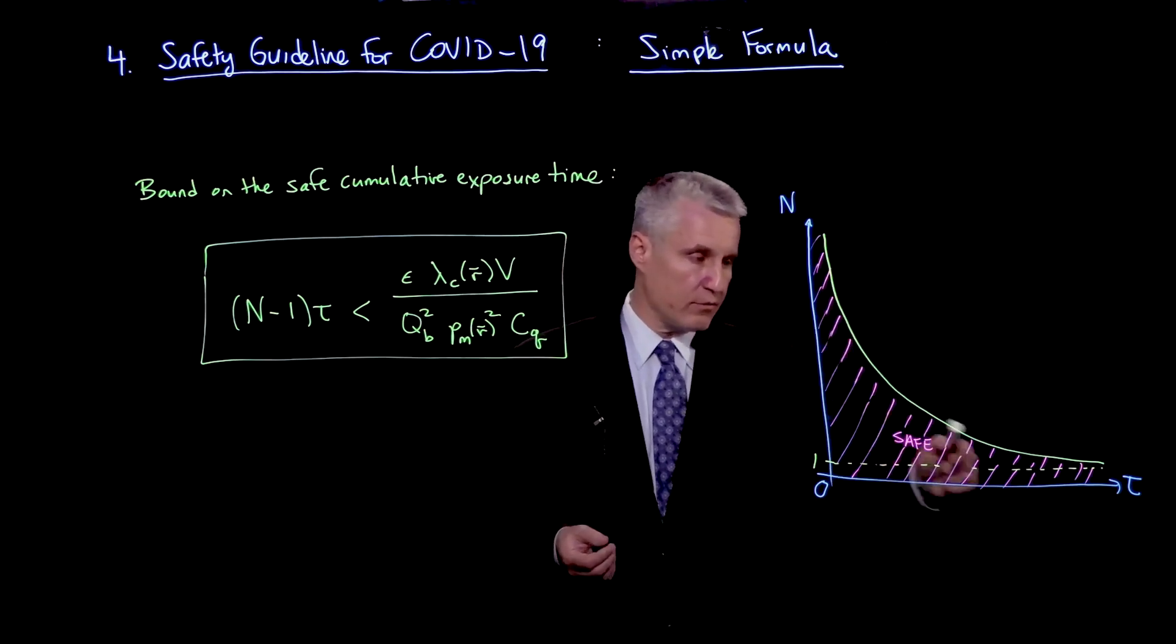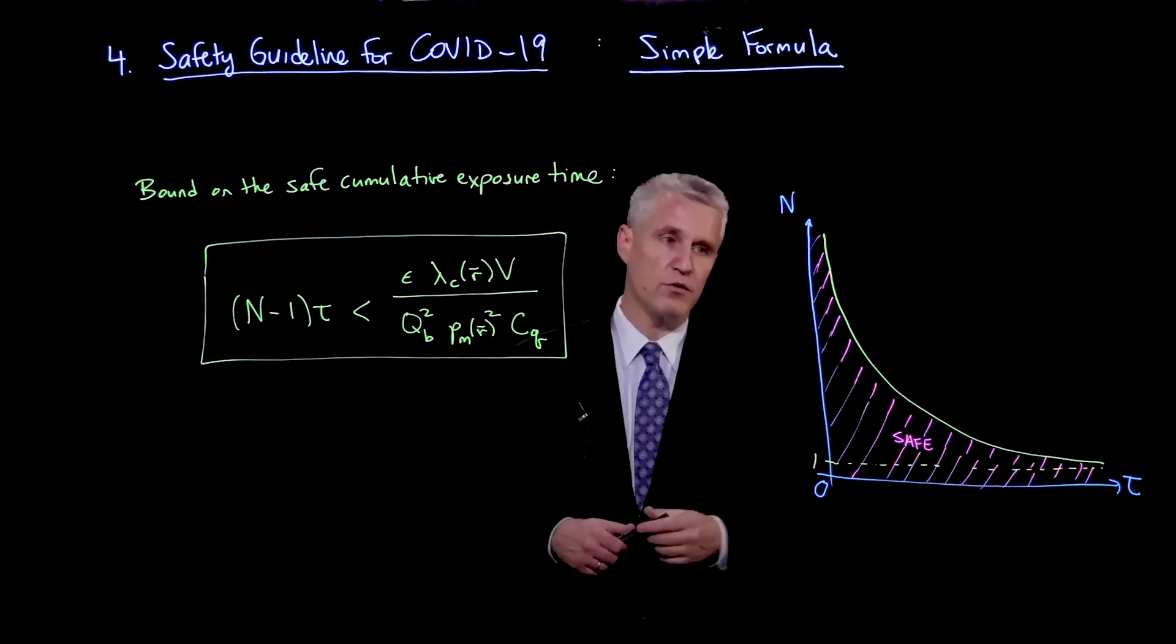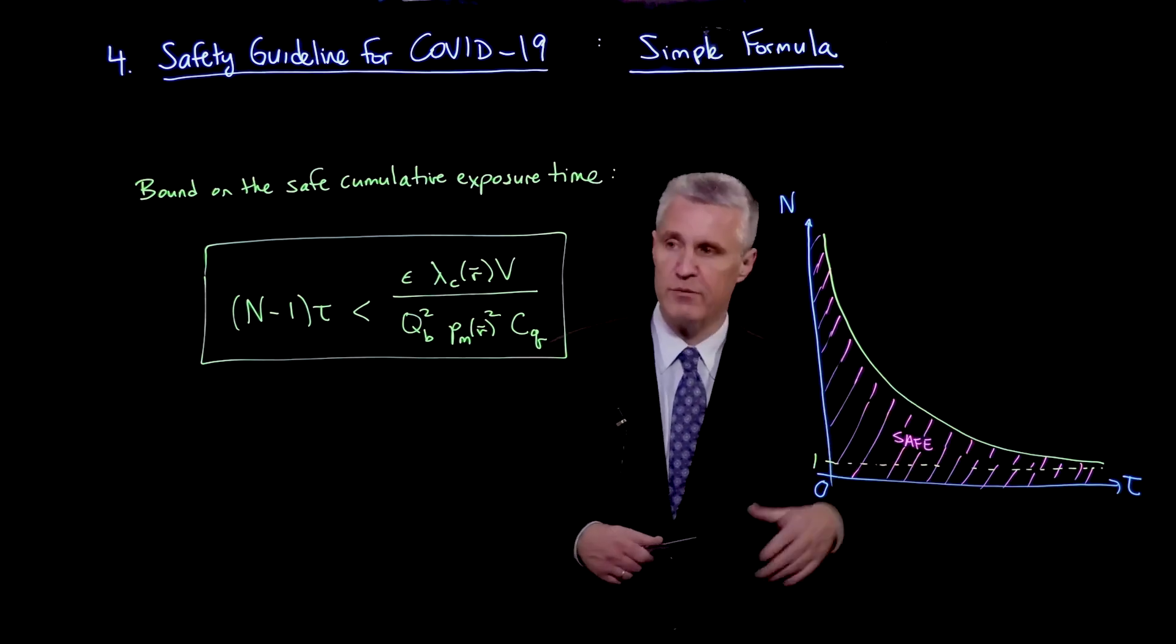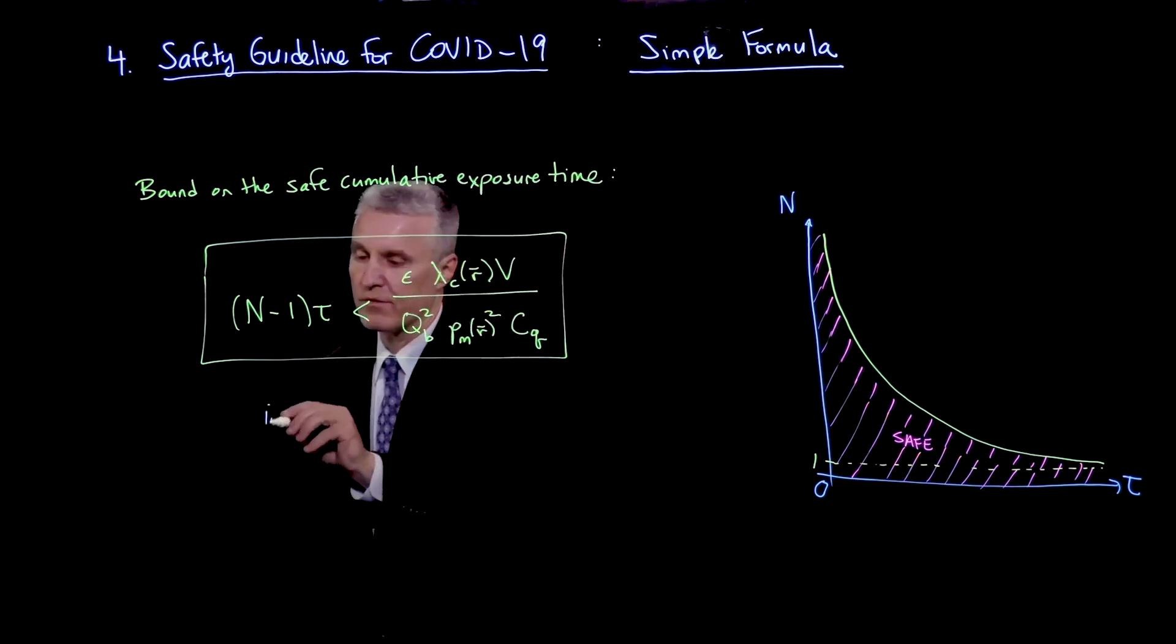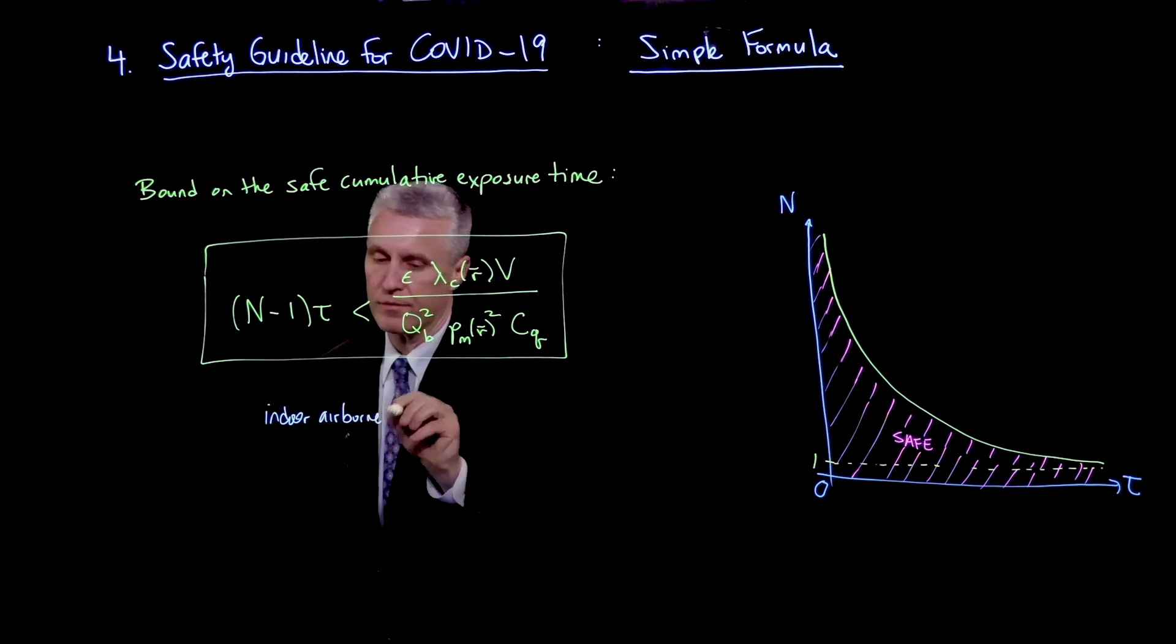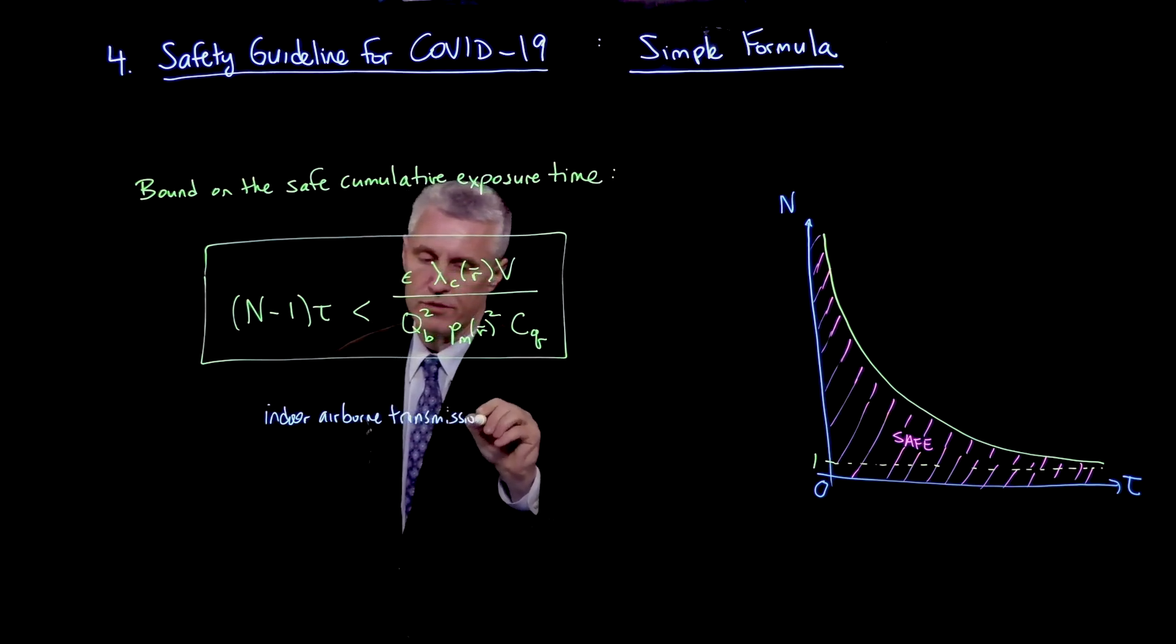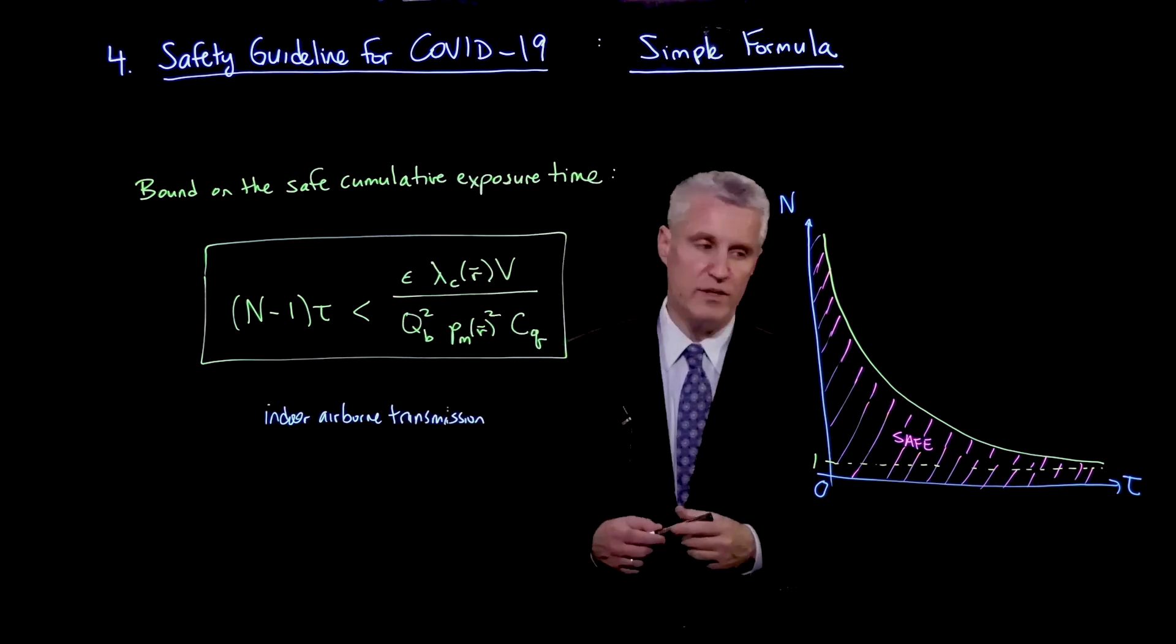And so that relationship is plotted as this yellow curve. And if you're below that curve, you're safe. So you have either smaller time than that or a lower occupancy. And that's how you can decide the safety. Again, this is the safety exposure guideline for indoor airborne transmission.